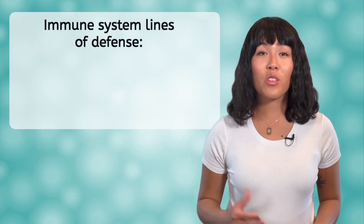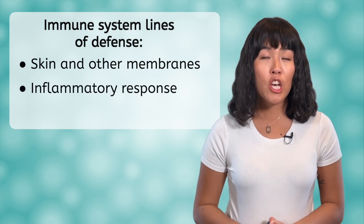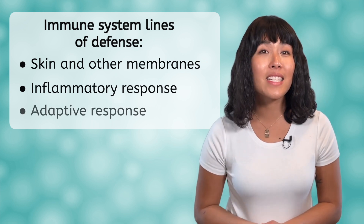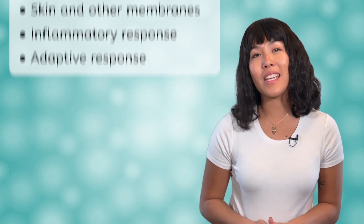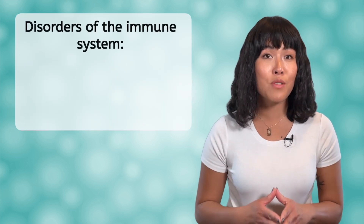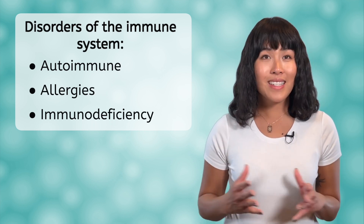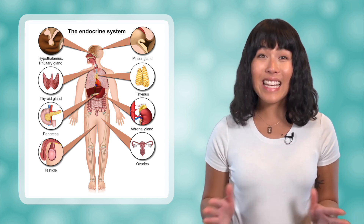As we went through the lesson today, we saw that the immune system responds to pathogens with three different lines of defense: our skin and other membranes attempt to keep all foreign substances out; the inflammatory response uses phagocytes to consume any foreign particles that do get in; and the adaptive response targets and destroys specific known pathogens. In the lesson PDF, you'll look at some common disorders of the immune system, including autoimmune disorders, allergies, and immunodeficiency disorders. Next time, we'll take a look at another important body system, the endocrine system. Until then, remember that biology isn't just science — it's the way of life.